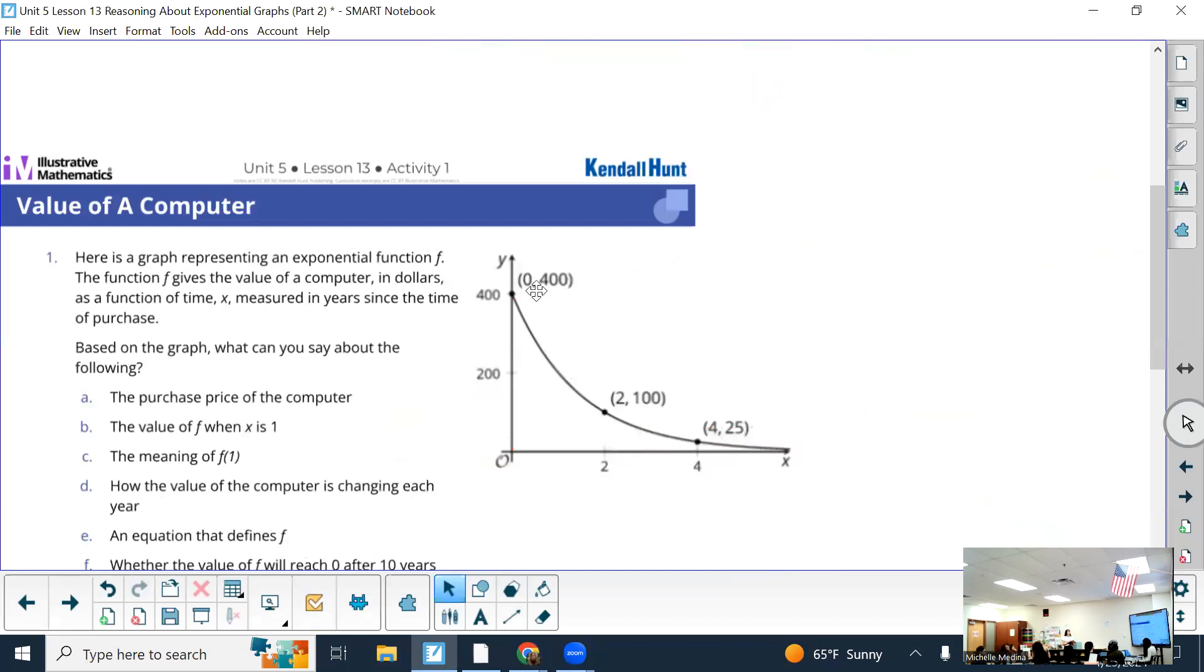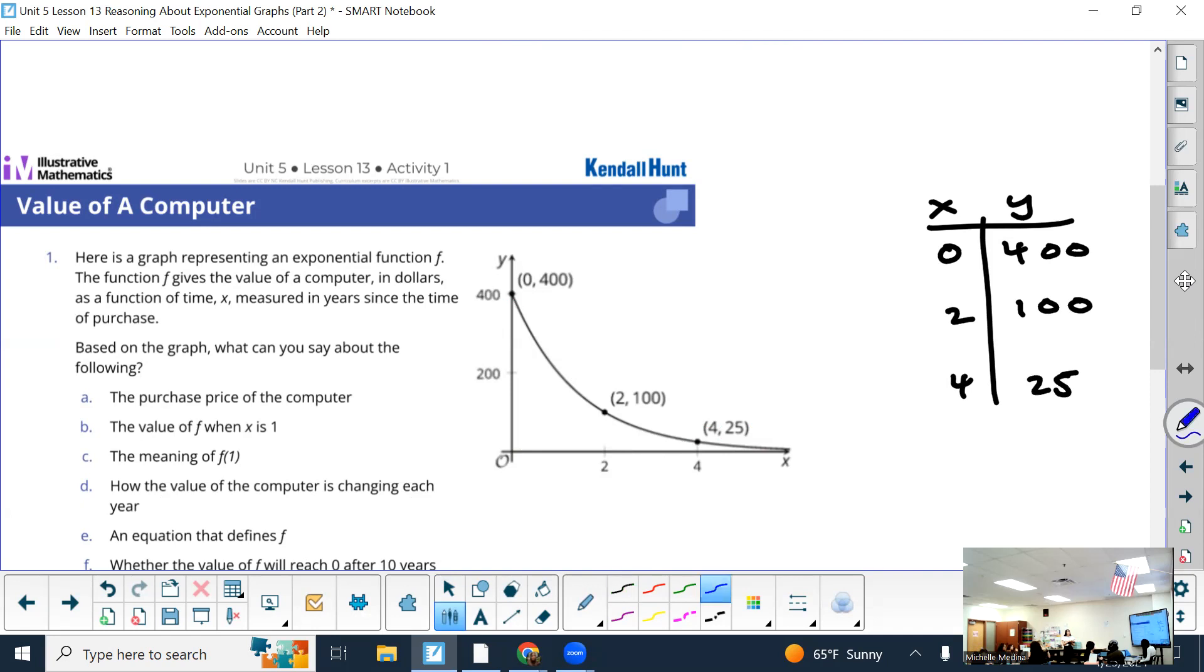Let's refer back to this graph. Notice that they give you three different coordinates, not necessarily in order like zero, one, two, three, four—it's zero, two, and four. What I would suggest when you don't have all the points right next to each other: organize your data in a table but leave room for what's missing. For example, we're missing the one between zero and two, we're missing the three between two and four, we're also missing the outputs.